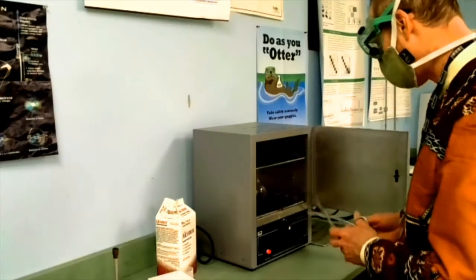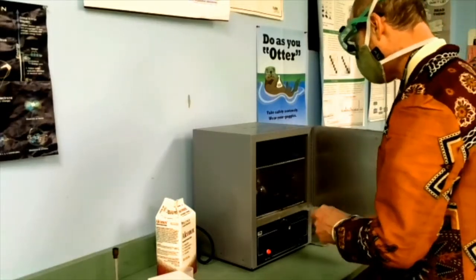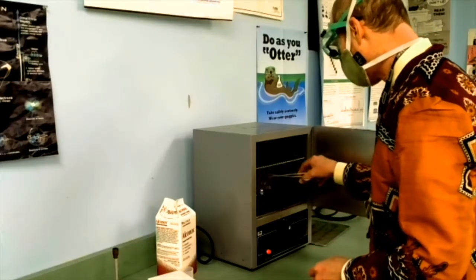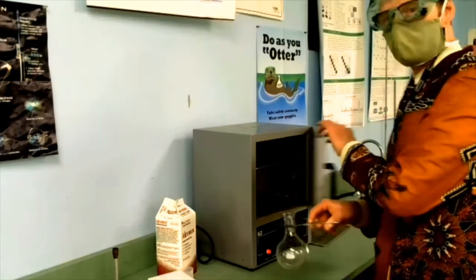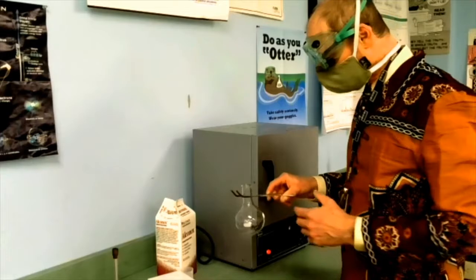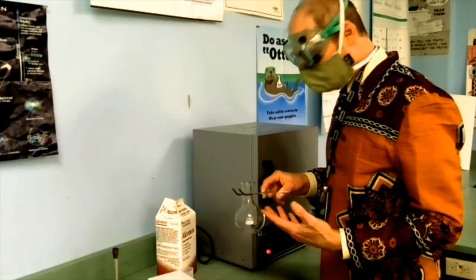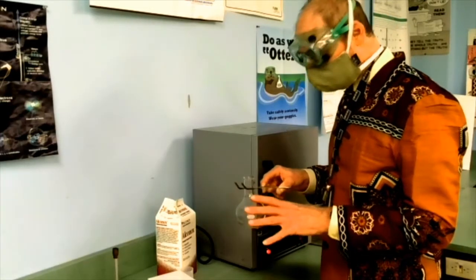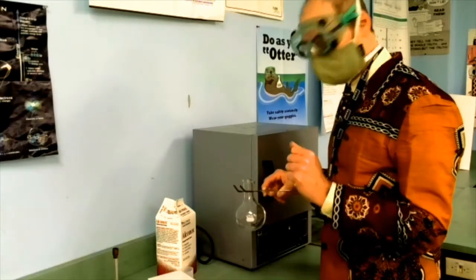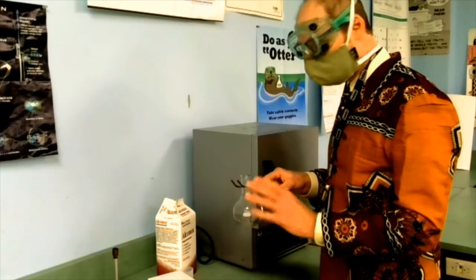Now I'm going to take the actual receiving flask out of the oven. I'm going to handle it with tongs, partly because it's hot and mostly because I don't want to be changing the mass, and I don't want to add a fingerprint or a smudge or anything like that at any point during this process.